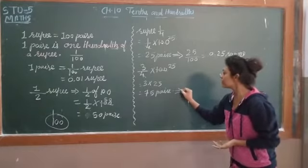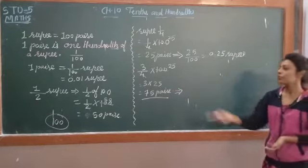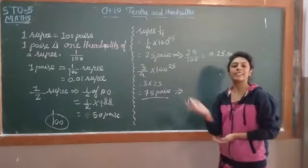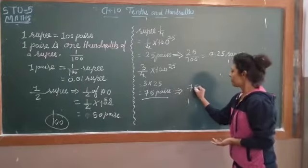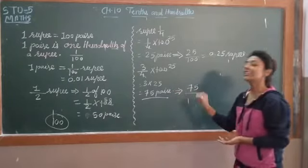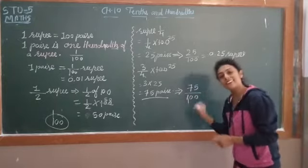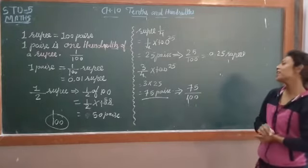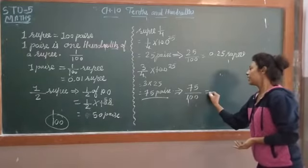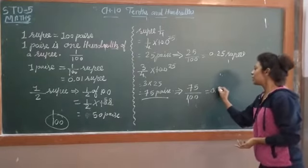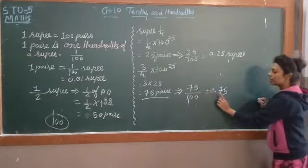Again, we will do this one. 75 paise — to convert 75 paise, what do we do? We will divide the number by 100. Why 100? Because 1 rupee has 100 paise. So, 0.75 — that is the result.